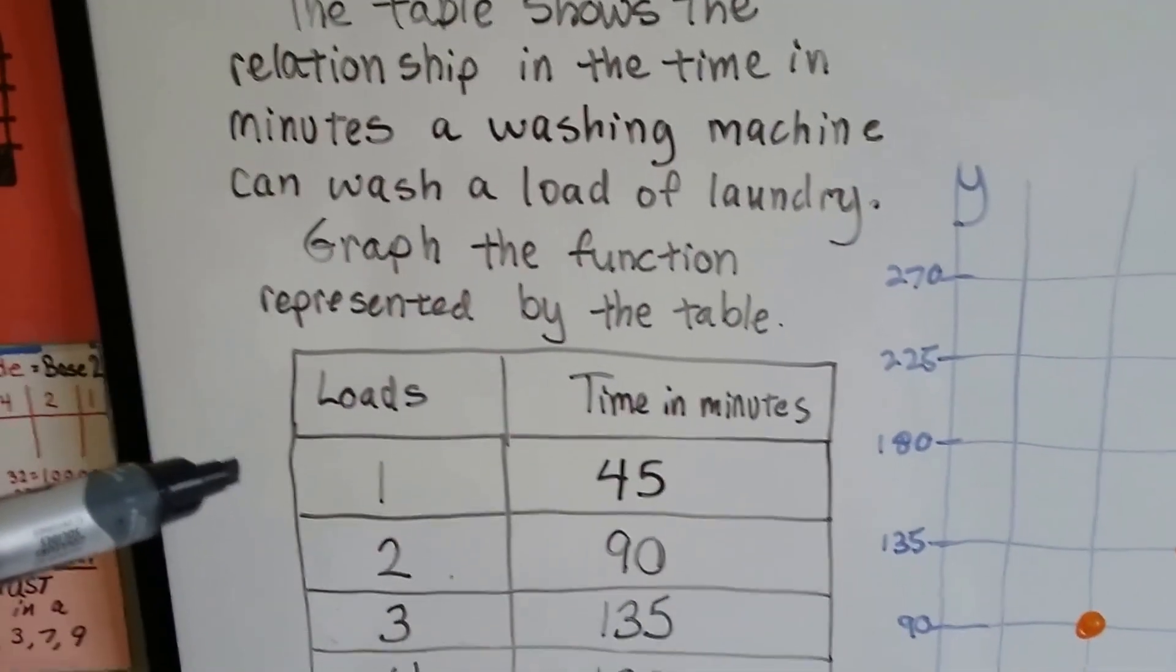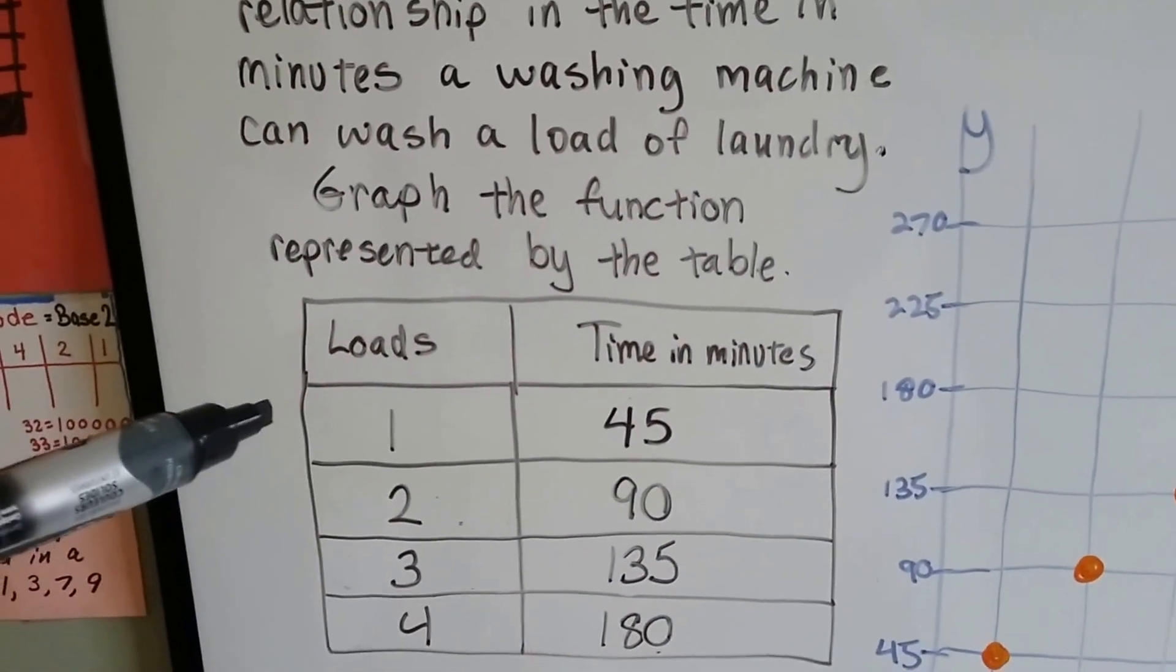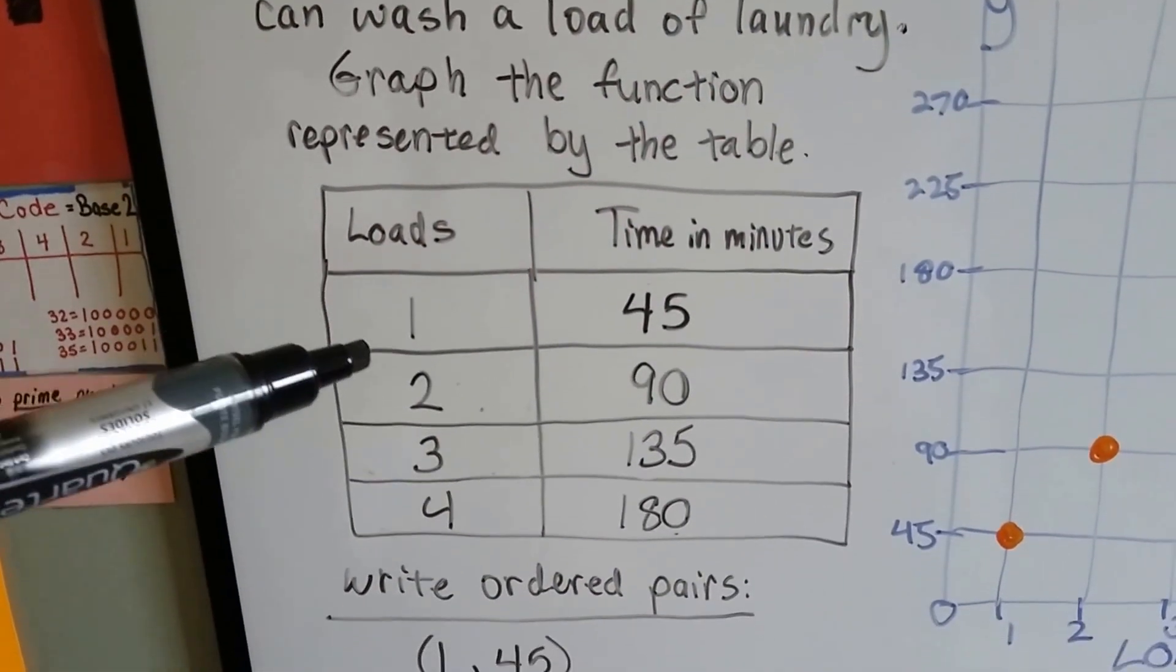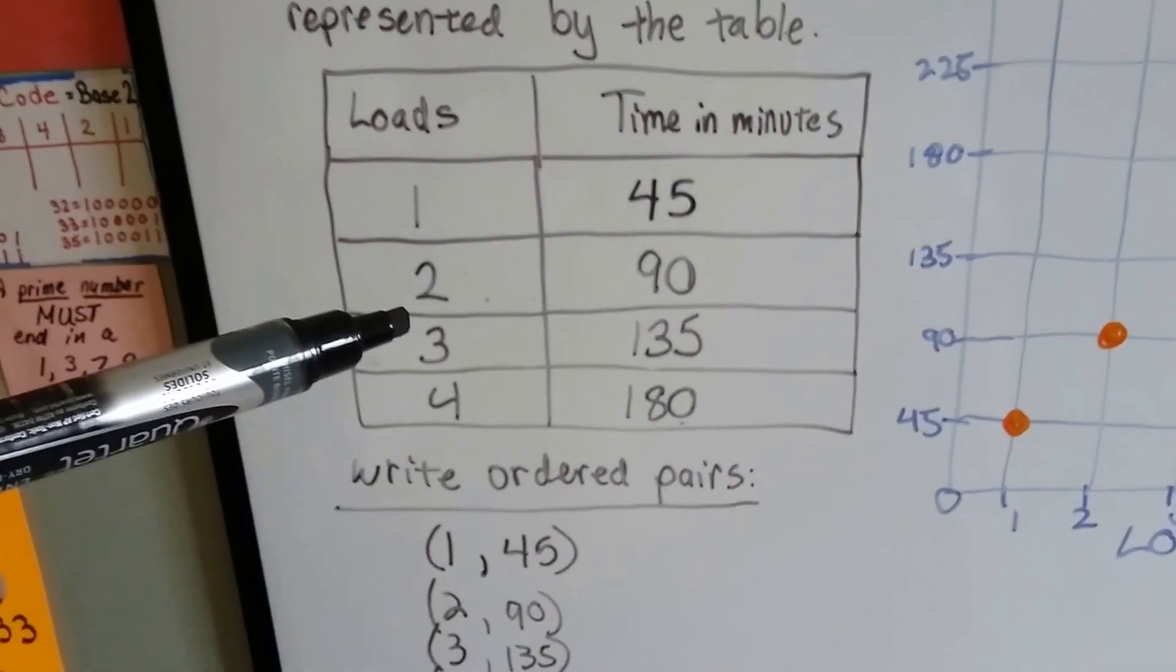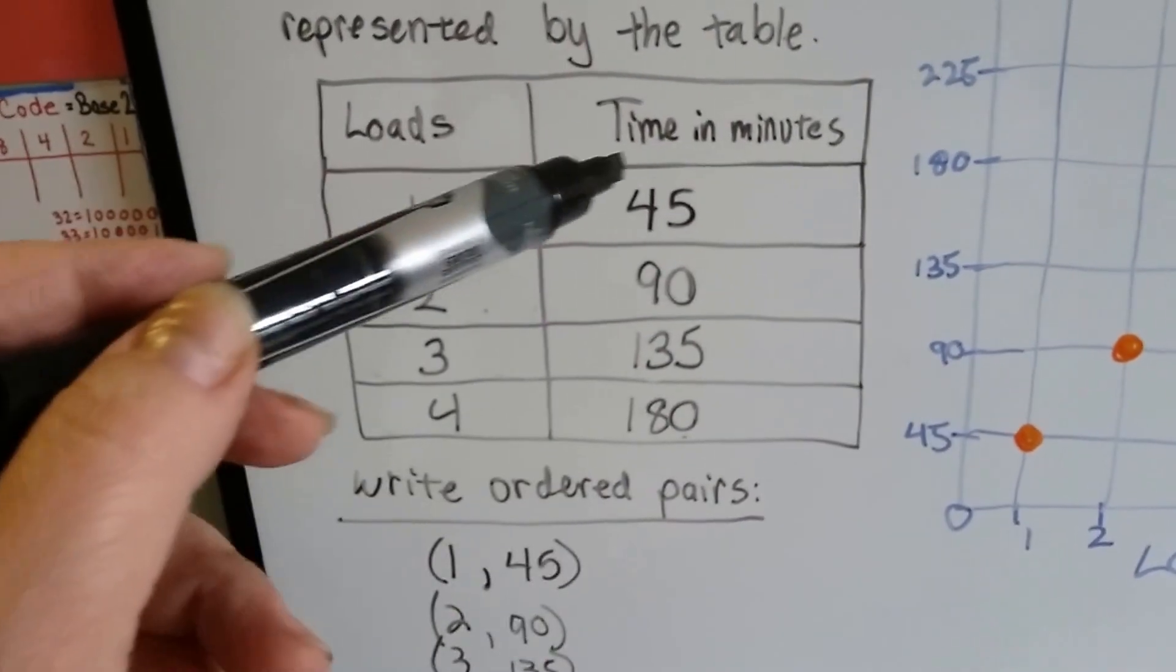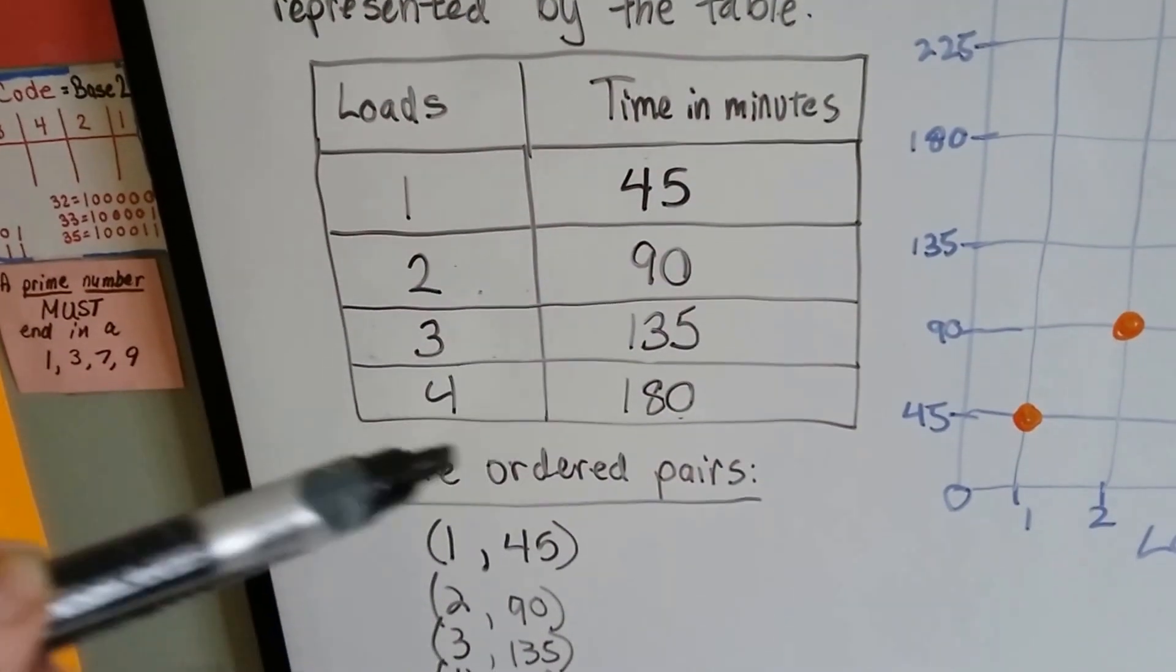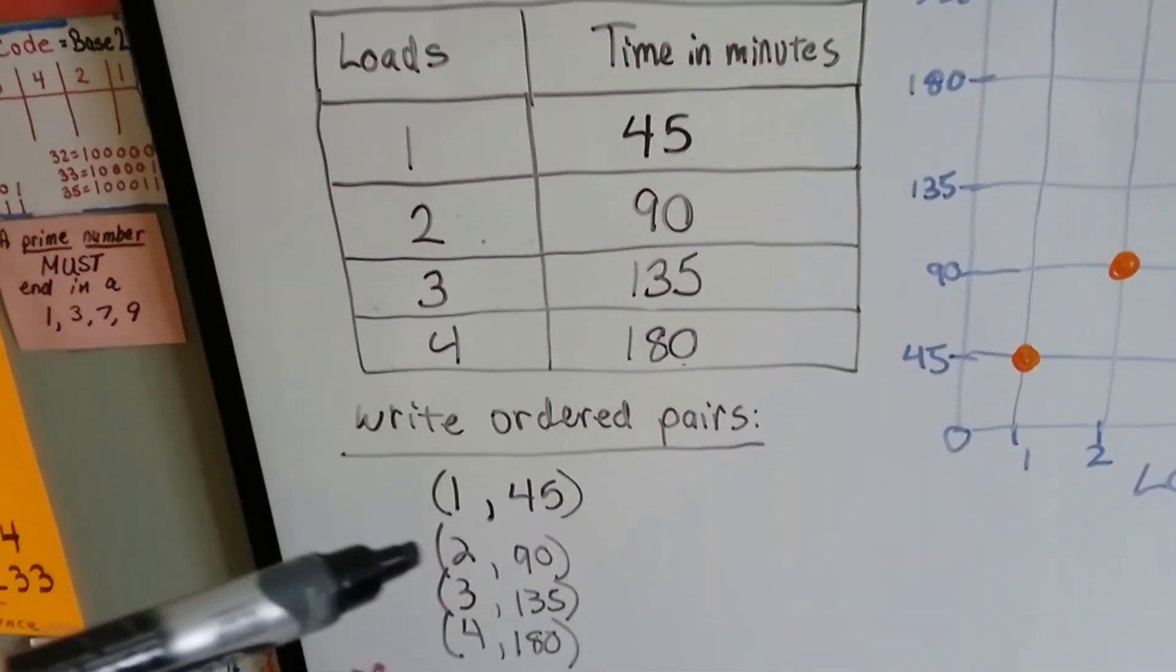This table shows the relationship in the time in minutes a washing machine can wash a load of laundry. Graph the function represented by the table, and we'll write ordered pairs. One load is 45 minutes, so two loads is 90 minutes, three loads is 135 minutes, and four loads is 180 minutes.